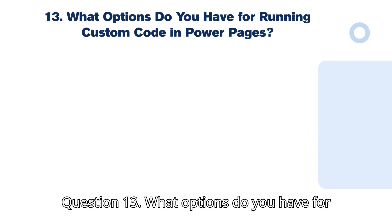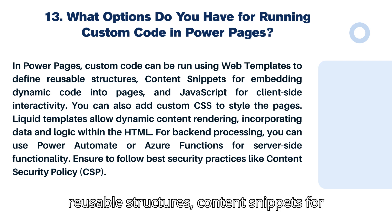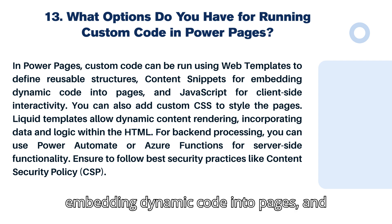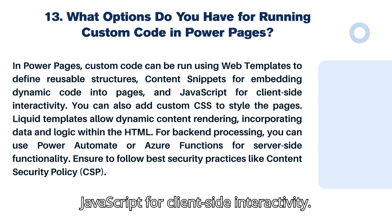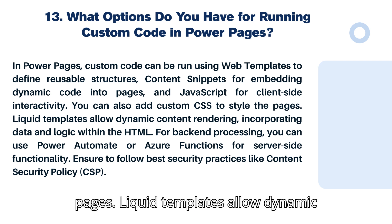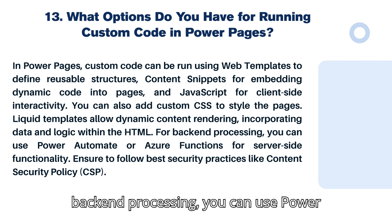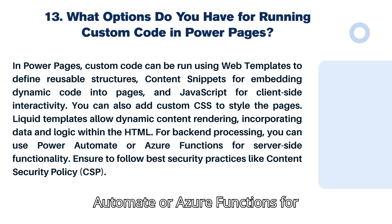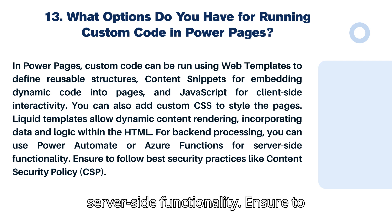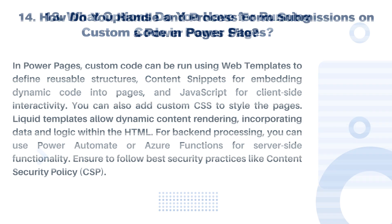Question 13: What options do you have for running custom code in Power Pages? Custom code can be run using web templates to define reusable structures, content snippets for embedding dynamic code into pages, and JavaScript for client-side interactivity. You can also add custom CSS to style the pages. Liquid templates allow dynamic content rendering, incorporating data and logic within the HTML. For backend processing, you can use Power Automate or Azure Functions for server-side functionality. Ensure to follow best security practices like Content Security Policy.